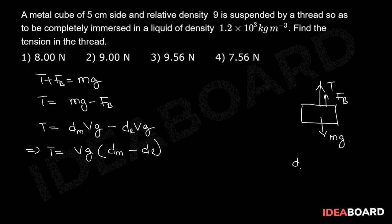Now density of liquid is given as 1.2 × 10³ kg/m³ and relative density is given as 9. So density of mass will be 9 × 10³ kg/m³.